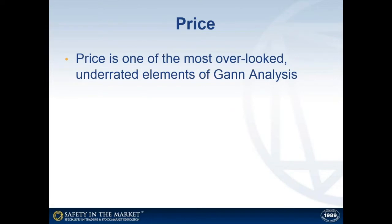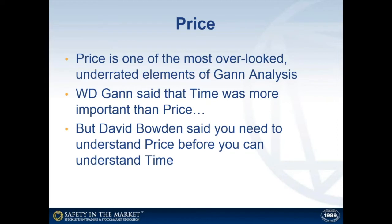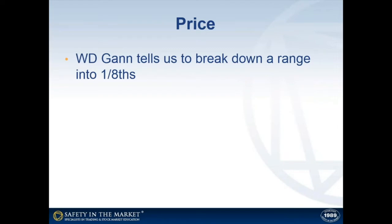Price itself is one of the most overlooked and underrated elements of GAN analysis. A lot of people study W.D. Gann's work and often quote Gann where he said that time is more important than price — and that is absolutely true. However, David Bowden, the founder of Safety in the Market, took that phrase one step further when he said: in order to understand time, you have to understand price first. That's where a lot of people go wrong. They want to run in and look at time, but in order to get a full understanding of time, you need to have a mastery of price first. W.D. Gann told us to break down market ranges into one-eighth points, and by doing that we get a series of price milestones to watch.